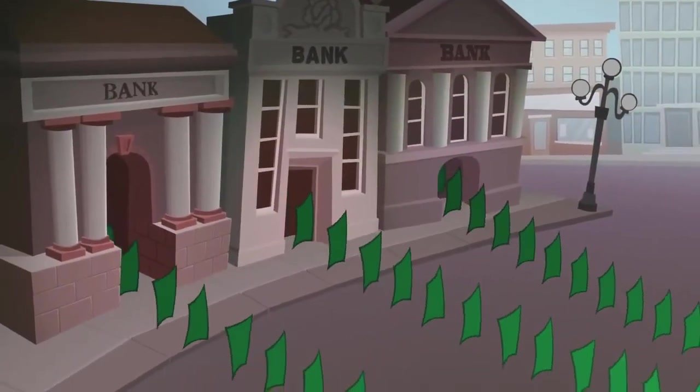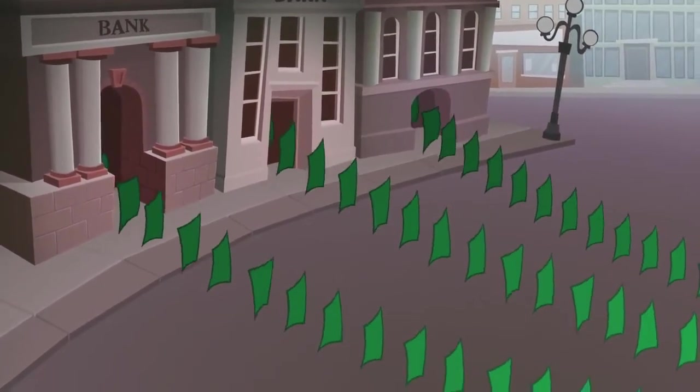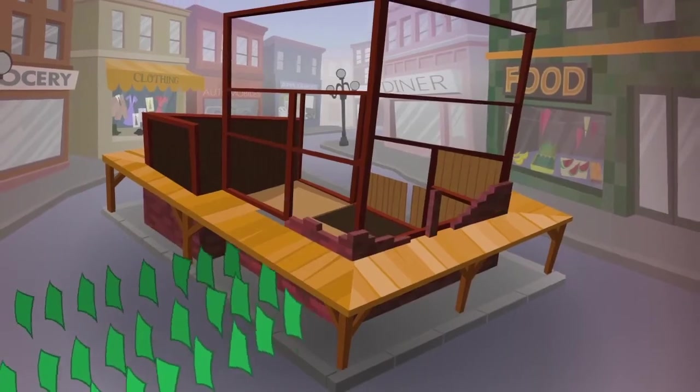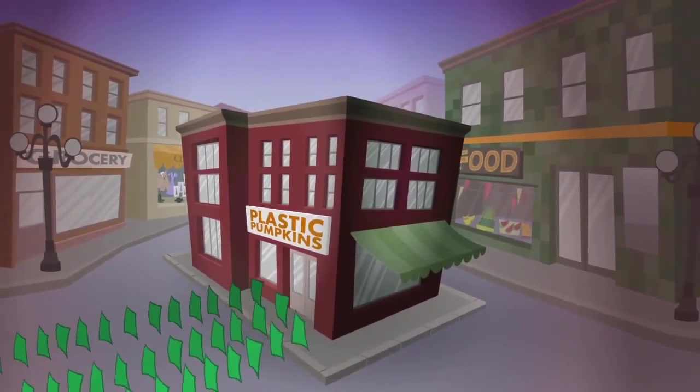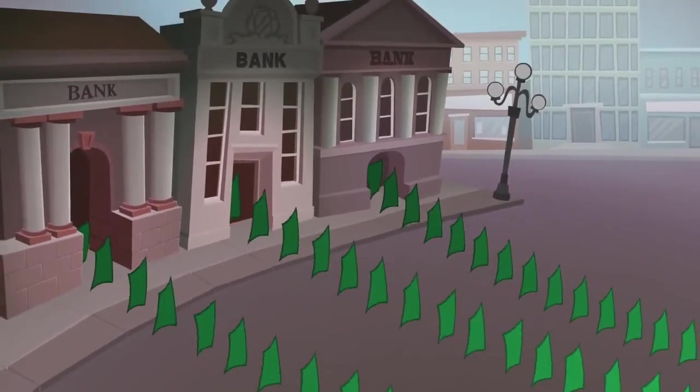The financial system is built on the assumption of growth, which requires an increasing supply of energy to support it. Banks lend money they don't have, in effect creating it. The borrowers use the newly created loan money to grow their businesses and pay back the debt, with an interest payment, which requires more growth.